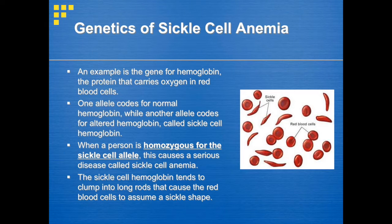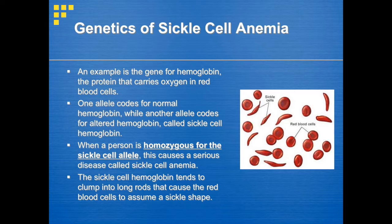Punnett squares can help us determine the likelihood that a child will inherit a genetic disorder from their parents. Genetic disorders occur because some alleles of certain genes can cause diseases. Let's use sickle cell anemia as an example. The gene for hemoglobin can have two alleles: one that codes for normal hemoglobin, and another that codes for sickle cell hemoglobin. If a person is homozygous for the sickle cell allele, then they will have the disease sickle cell anemia, meaning both alleles must be for sickle cell hemoglobin. We can see the difference in shape between the sickle cells and the normal red blood cells.